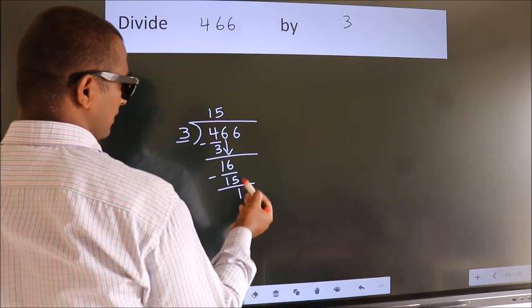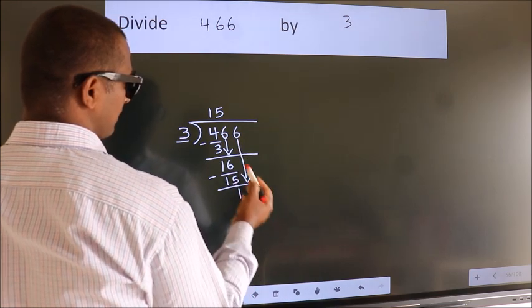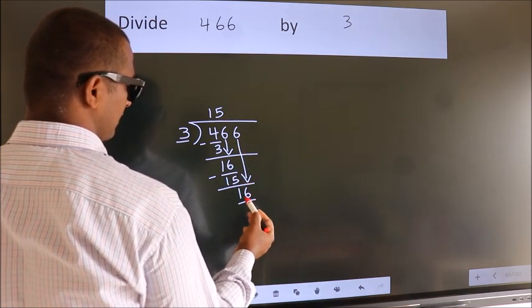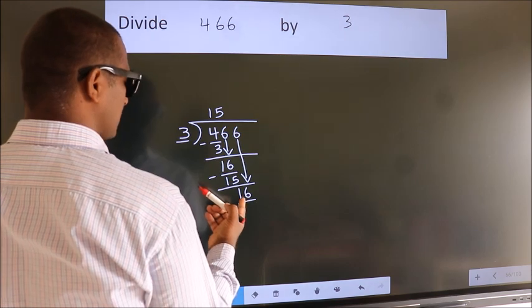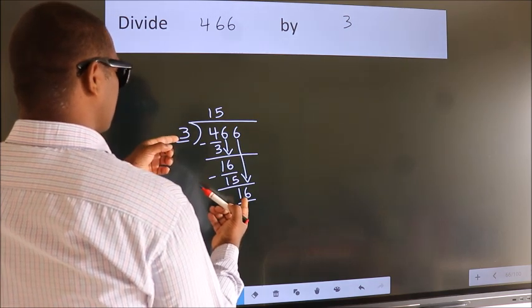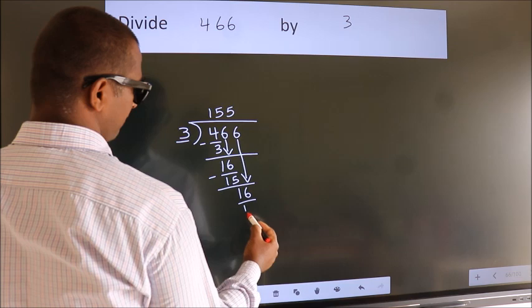After this, bring down the beside number. So, 6 down. So, 16. A number close to 16 in 3 table is 3 times 5 equals 15.